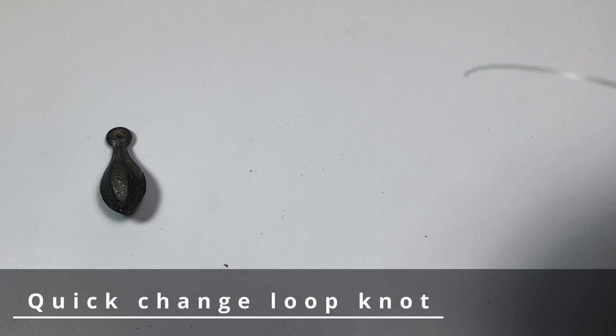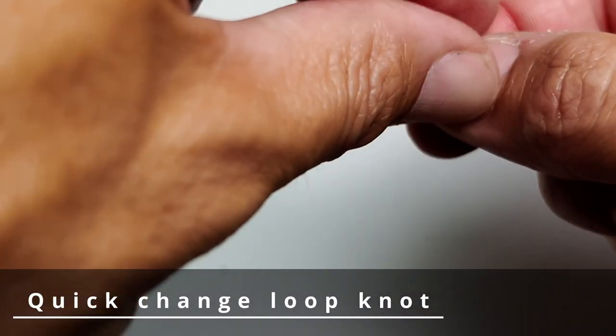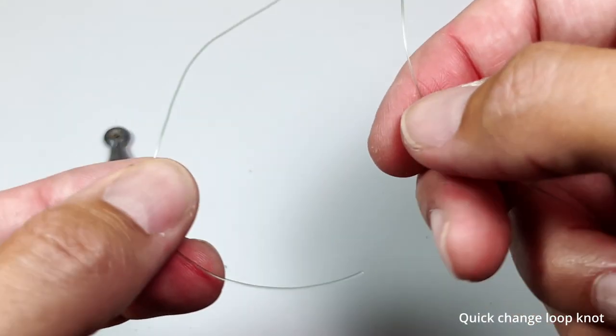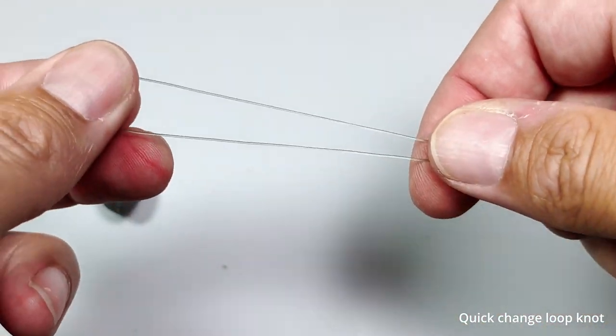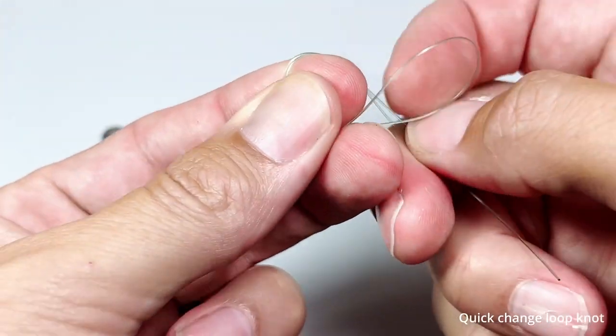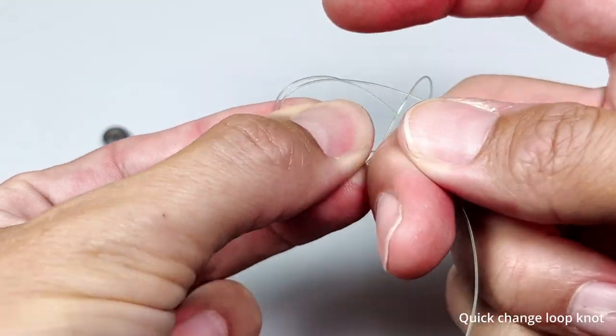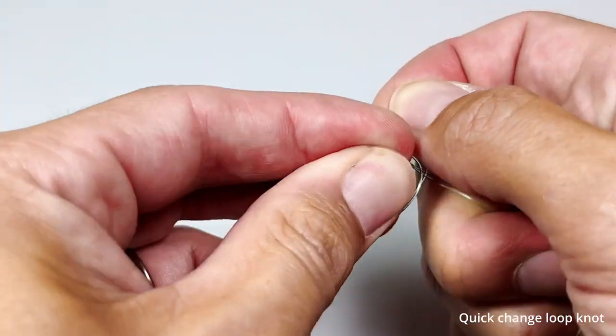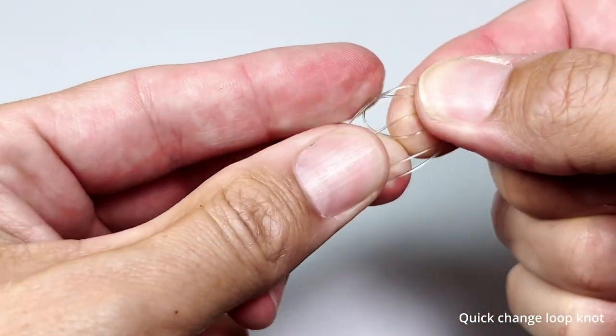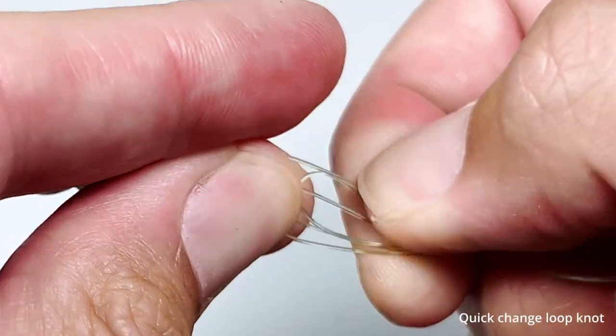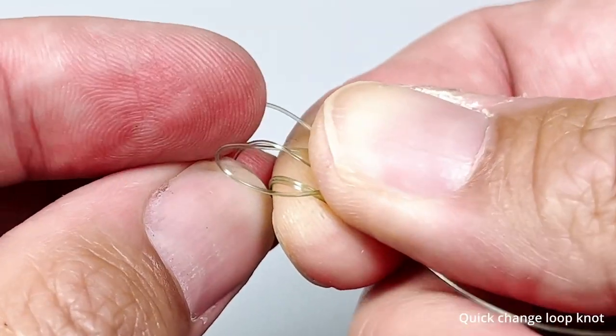The next knot is the quick change loop knot. You pull the tag end and loop it over into a large loop. You then perform an overhand knot and wrap it around once or twice. If I'm using the loop for a heavier weight, I'd probably wrap it twice.